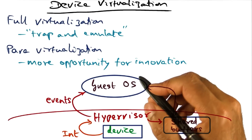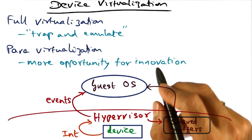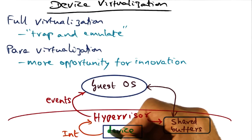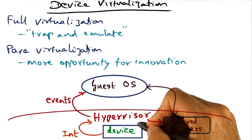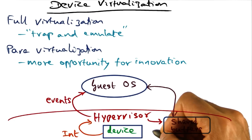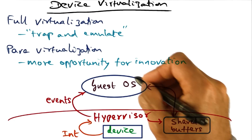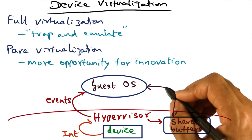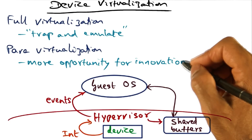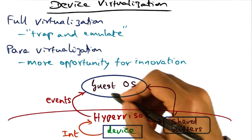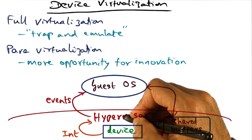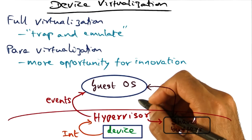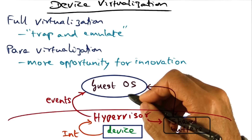The para-virtualized setting is much more interesting. The IO devices seen by the guest operating system are exactly the ones that are available to the hypervisor — that is, the set of hardware devices available in the platform are exactly the ones that the para-virtualized guest operating system is going to be able to manipulate. This gives an opportunity for innovating the interaction between the guest operating system and the hypervisor, particularly in making device virtualization more efficient in a para-virtualized environment.